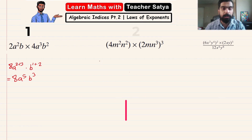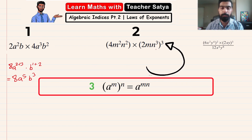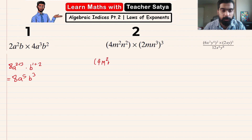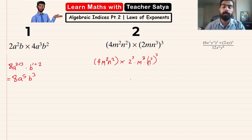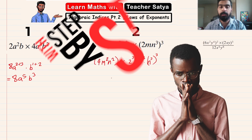Going to question number two — we can see that there is a bracket raised to the power of three in the second term. That means we are going to use the third law and break this exponential value first. The first bracket stays the same: four m squared n squared. Then everything inside the second bracket is raised to the power of three, giving us two to the power of three, multiplied with m to the power of three, multiplied with n to the power of three. In these kinds of questions, it is always good to go step by step so we don't make any careless mistakes.